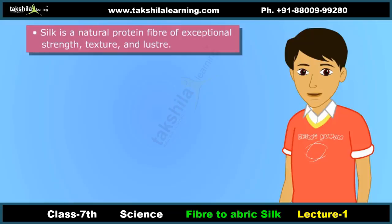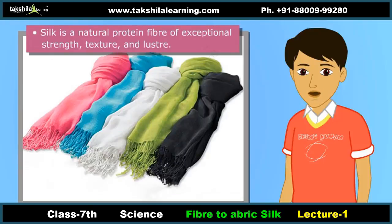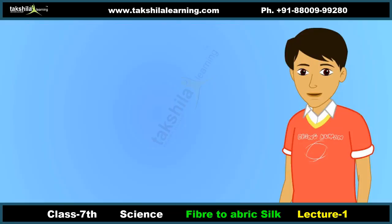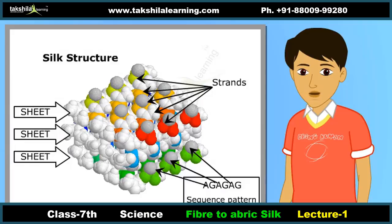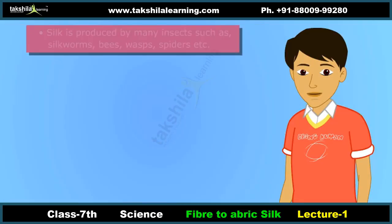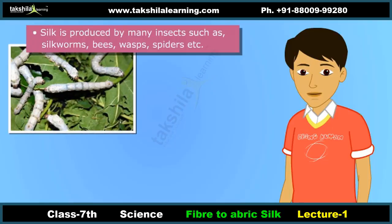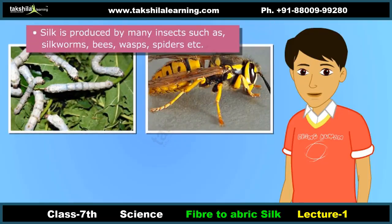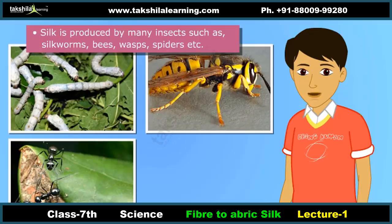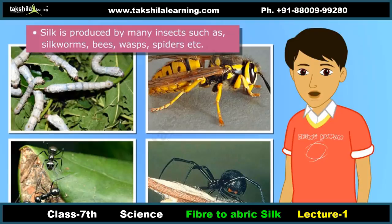Silk is a natural protein fiber of exceptional strength, texture, and luster. The shimmer of silk fiber is the result of its triangular prism-like structure. Silk is produced by many insects such as silk worms, bees, wasps, and ants, that use it for building their nests. Spiders also produce silk, but the silk produced by silk worms only is processed into silk fabric.